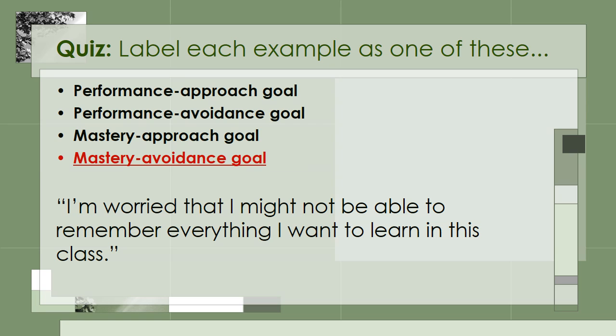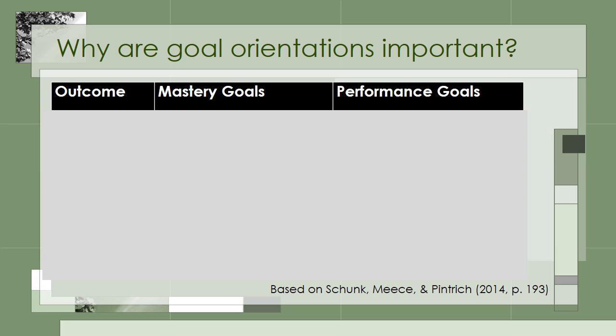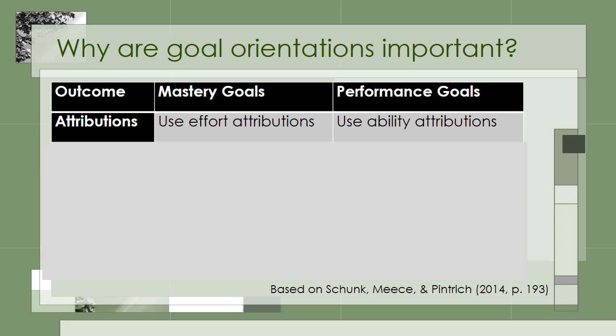Hopefully this gives you a better feel for each of these four goal orientations. Now you may be wondering, why are goal orientations important? Researchers have tried to identify differences between mastery and performance goals on outcomes such as attributions, affect, cognition, and behavior. Generally, students with mastery goals are more likely to use effort attributions, while students with performance goals are more likely to use ability attributions. This is important because students who attribute their failures and successes to effort tend to be more motivated to engage in similar activities in the future.